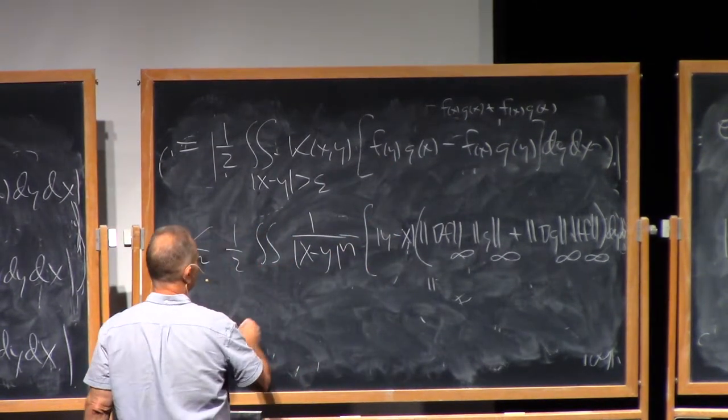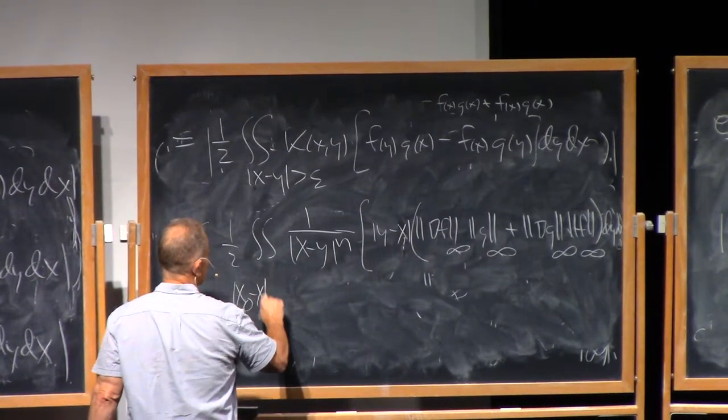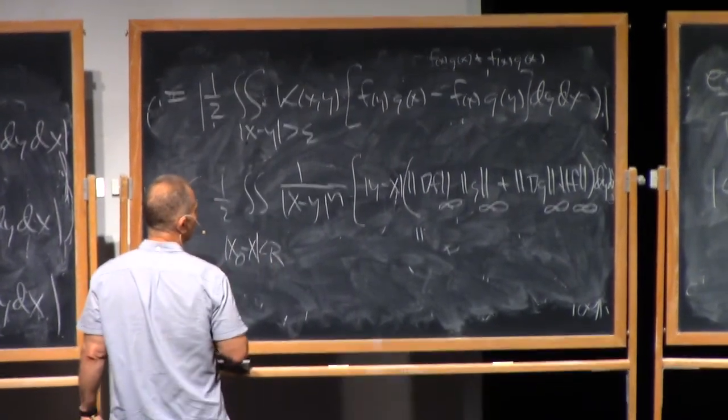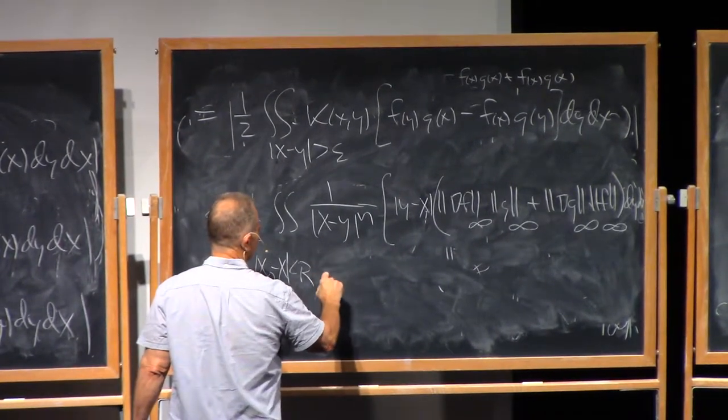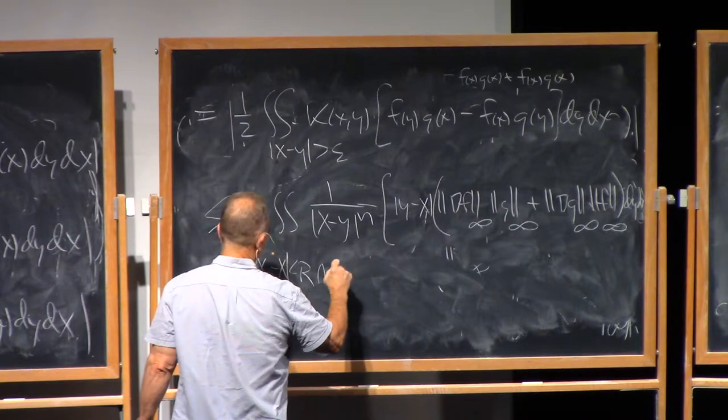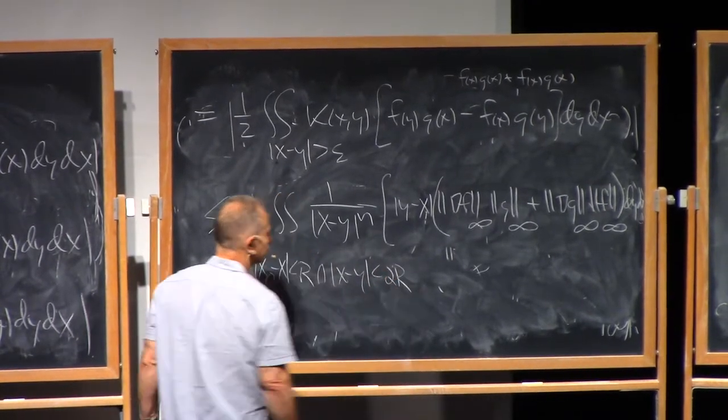So when I integrate in, let's say, x, I have x-naught minus x less than r. And I also have, just by the triangle inequality, x minus y less than 2r.